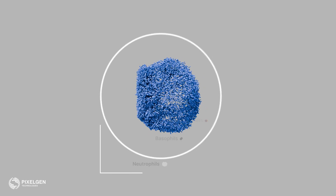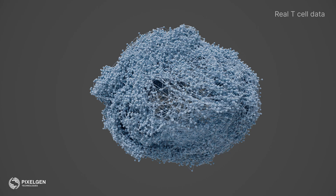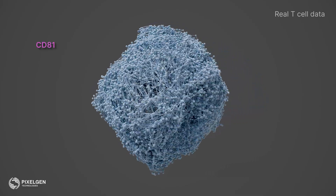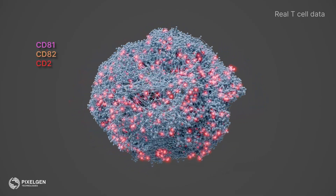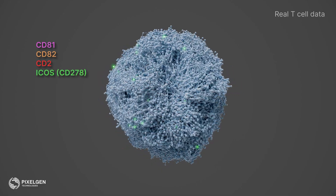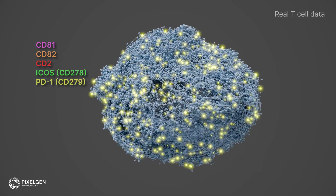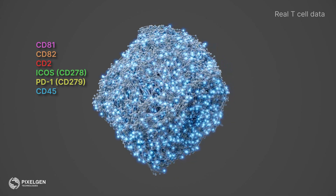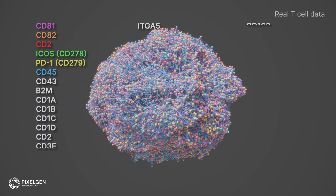The Proximity Network Assay produces single-cell data, which is 3D in nature, showing a representation of the cell surface. Over 150 protein targets are assayed in parallel, and scores for protein clustering, co-localization, and abundance are generated per single cell.